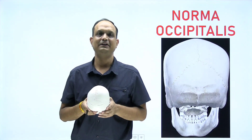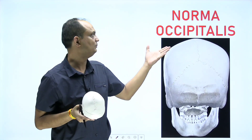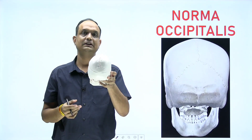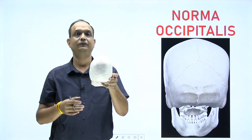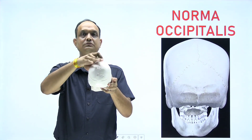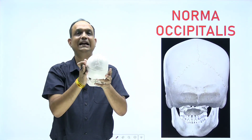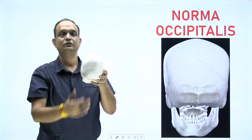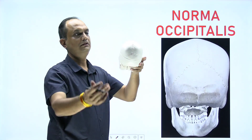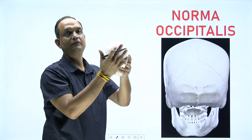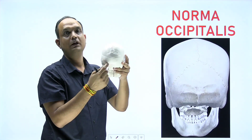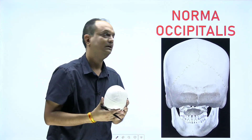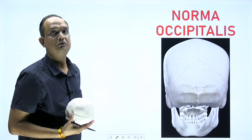Hello students, today we'll discuss the norma occipitalis part of the skull. Whenever you are holding the skull in your hand, you have different views: norma verticalis, norma frontalis, norma lateralis, norma basalis, and norma occipitalis. Today we are going to see the skull from the posterior side, where you will have the occipital bone, and this view is known as norma occipitalis.